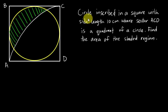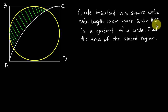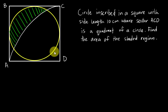The question says: a circle is inscribed in a square with a side length of 10 centimeters, where the sector ACD is a quadrant of a circle. So ACD over here is a sector — a quadrant basically means cutting the circle into four different parts. The angle here should be 90 degrees.